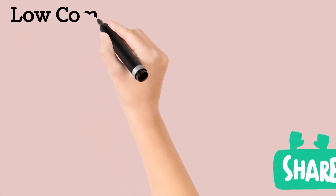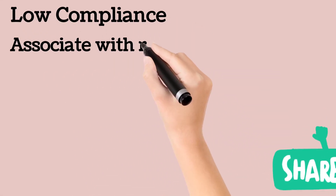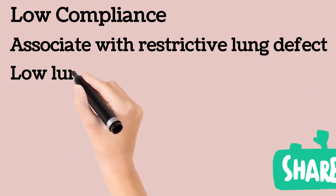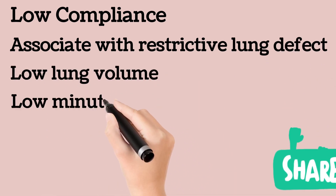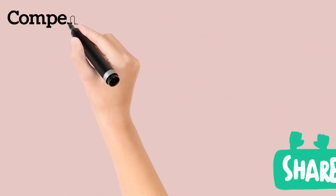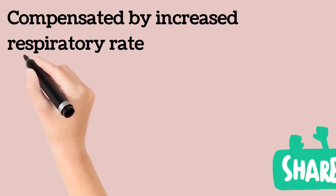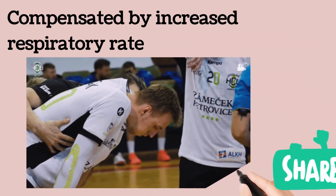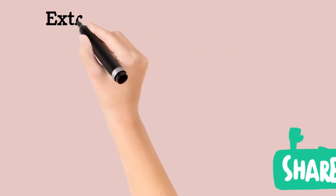Refractory hypoxia is usually caused by intrapulmonary shunting. Patients with non-compliant lungs often have a restrictive lung defect, low lung volumes, and low minute ventilation. This condition may be compensated by an increased respiratory frequency.